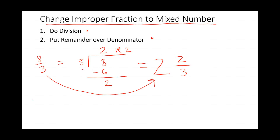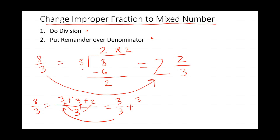Now there's another way we can do this. I'm going to write 8 thirds equal and draw a long fraction bar. In the numerator, I'm going to say 3 plus 3 plus 2 — that equals 8 — and put it over the denominator 3. There are two 3's in the numerator, so I can rewrite this fraction as 3 divided by 3, plus 3 over 3, plus 2 thirds. 3 divided by 3 is 1, plus 3 divided by 3 is 1, plus 2 thirds. So we can rewrite this as 1 plus 1 plus 2 thirds.